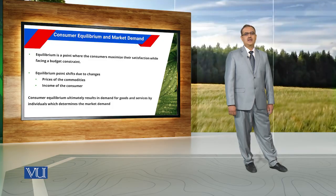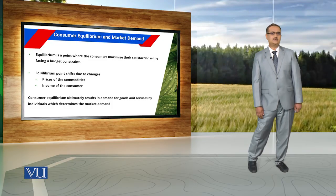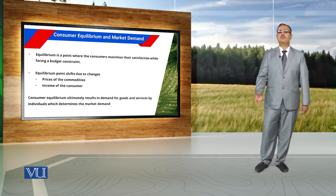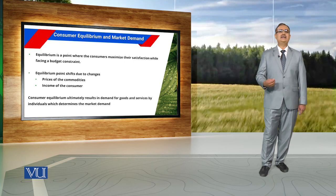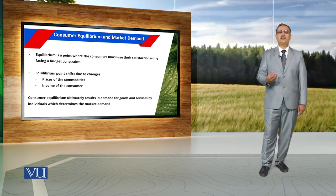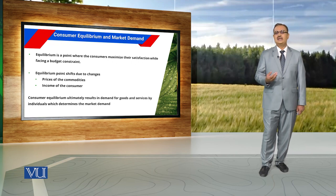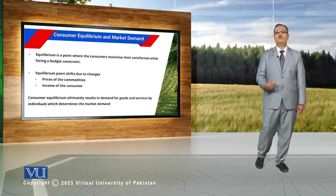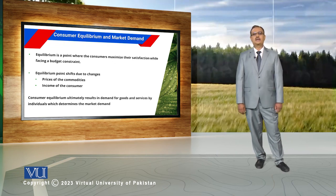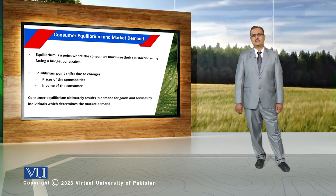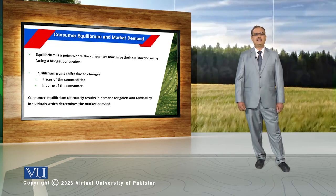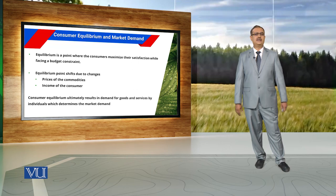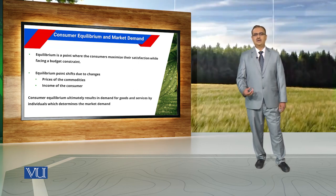Similarly, if we assume prices of commodities remain constant and there is an increase in income of the consumer, because of that increase in income the affordability of the consumer will increase. The consumer can purchase more of both commodities, and there is a change in the combination of commodities against which the consumer is achieving satisfaction. We will understand the concept of consumer equilibrium in detail in the next few modules.